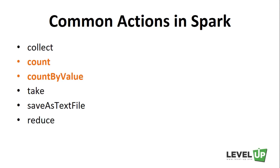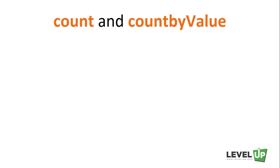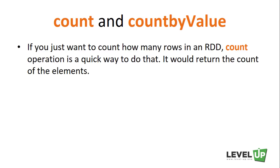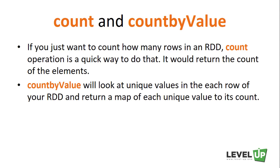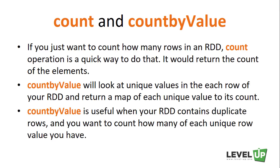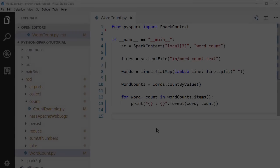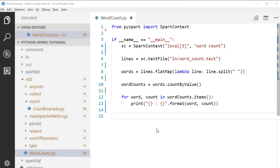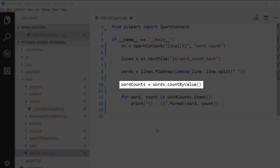Next, we want to talk about count and countByValue actions. If you just want to count how many rows are in an RDD, the count operation is a quick way to do that — it returns the count of the elements. CountByValue will look at unique values in each row of your RDD and return a map of each unique value to its count. This is useful when your RDD contains duplicate rows and you want to count how many of each unique row value you have. We have already seen the usage of countByValue in our previous word count example, where it returns a map of each word and its count.